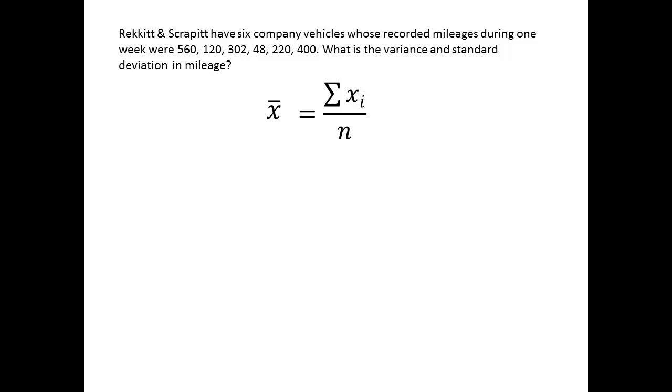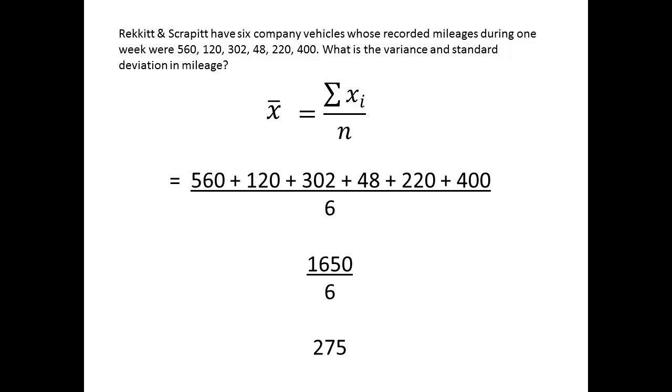Let us look at a second worked example. A firm has 6 vehicles whose mileages after a week are given as 560, 120, 302, 48, 220, and 400. We are to determine variance and standard deviation. The arithmetic mean X̄ is ΣXi divided by N, which is 560 plus 120 plus 302 plus 48 plus 220 plus 400, divided by 6, which comes to 1650 divided by 6. That gives an answer of 275.